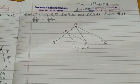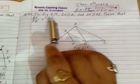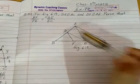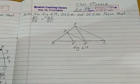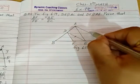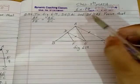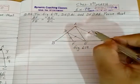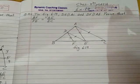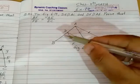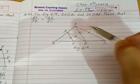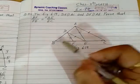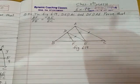Hello everyone, see question number 4 in figure 6.19. DE is parallel to AC and DF is parallel to AE. Prove that BF/FE equals BE/EC.